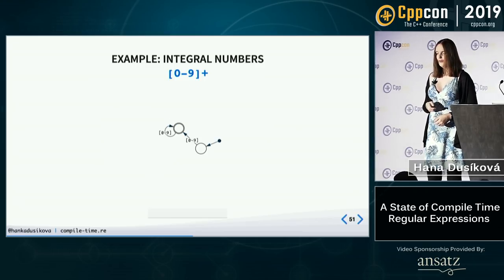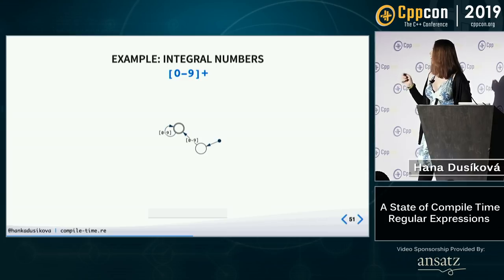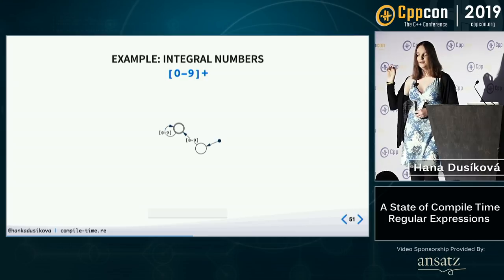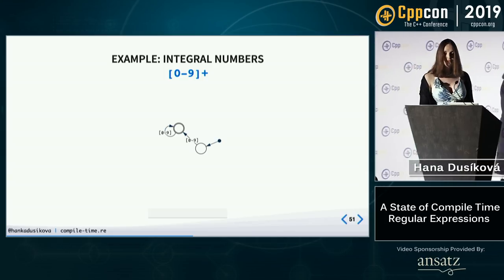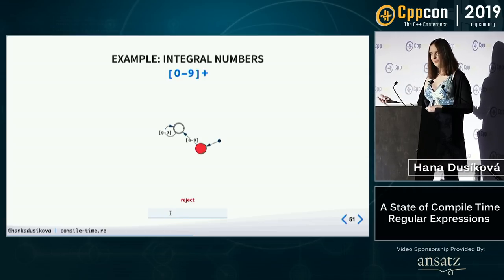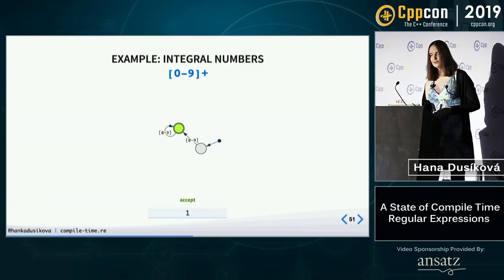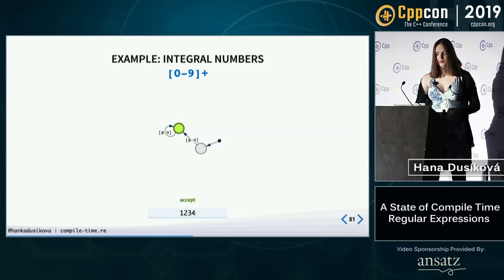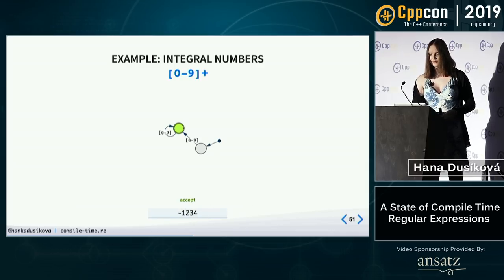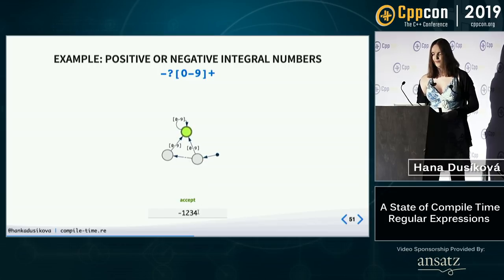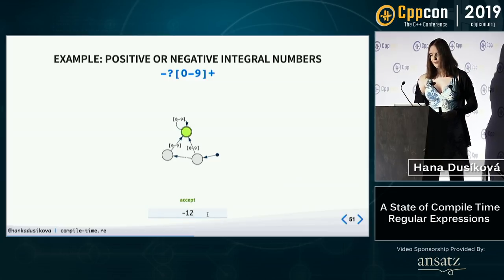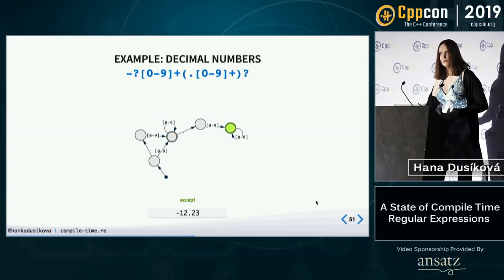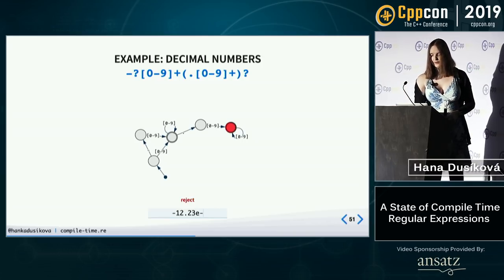A finite automaton accepts exactly the same class of languages as regular expressions, so we need to map them. For example, integral numbers as a finite automaton: the nodes are states and the links are transitions. At the beginning we are in start state; if we see a digit we move to an accepting state with a cycle for more digits. If we want negative numbers, we add a minus transition. If we want decimal numbers, we add more states and transitions. Same for scientific numbers.